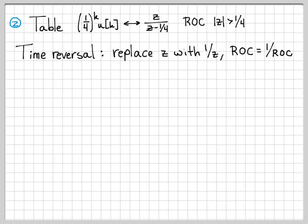We need to worry about that here when applying the time-reversal property. So the signal that I do have in part two is one-fourth to the minus k u of minus k. I can compute the Z transform of this quantity by using this time-reversal theorem. It says I just need to replace all the Zs in my original X of Z.